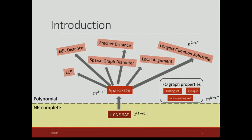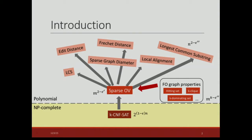We also introduce a class of problems which we call first-order graph properties. It includes problems like hitting set, k-clique, k-dominating set, and many other problems. Sparse orthogonal vectors is contained in this class, and we also show that this class of problems reduces to sparse OV — that is, sparse OV is complete in this class of problems.